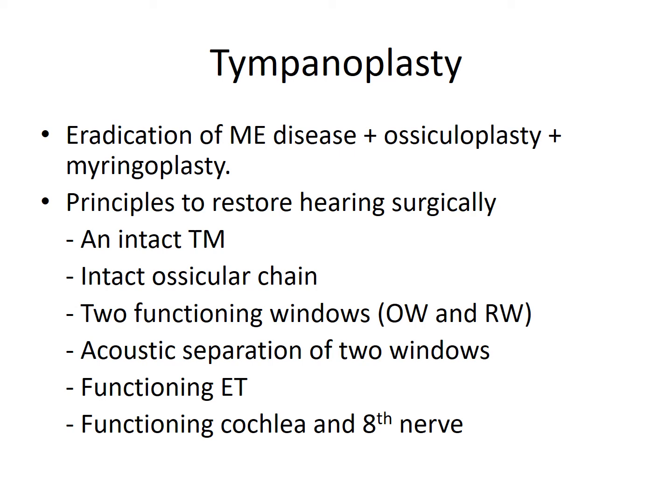Eustachian tube tests include the Toynbee test, Politzer test, and Eustachian catheterization. Finally, the Eighth Nerve and the Cochlea should be functioning normally — that is, there should be no Sensory Neural component in the hearing loss of that patient, which cannot be treated by Myringoplasty and Tympanoplasty.